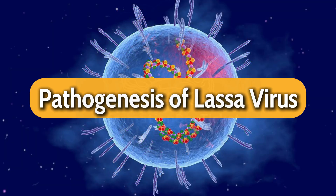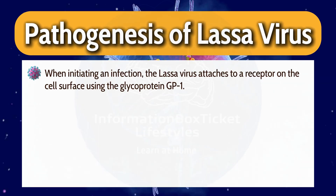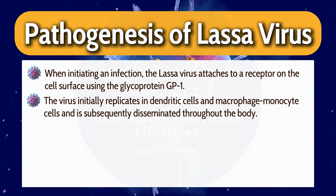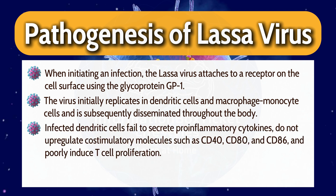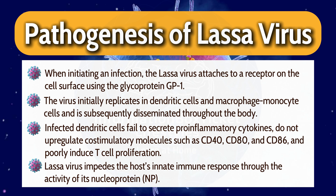Pathogenesis of Lassa Virus. When initiating an infection, the Lassa virus attaches to a receptor on the cell surface using the glycoprotein GP1. The virus initially replicates in dendritic cells and macrophage monocyte cells and is subsequently disseminated throughout the body. Infected dendritic cells fail to secrete pro-inflammatory cytokines, do not upregulate costimulatory molecules such as CD40, CD80, and CD86, and poorly induce T-cell proliferation. Lassa virus impedes the host's innate immune response through the activity of its nucleoprotein.